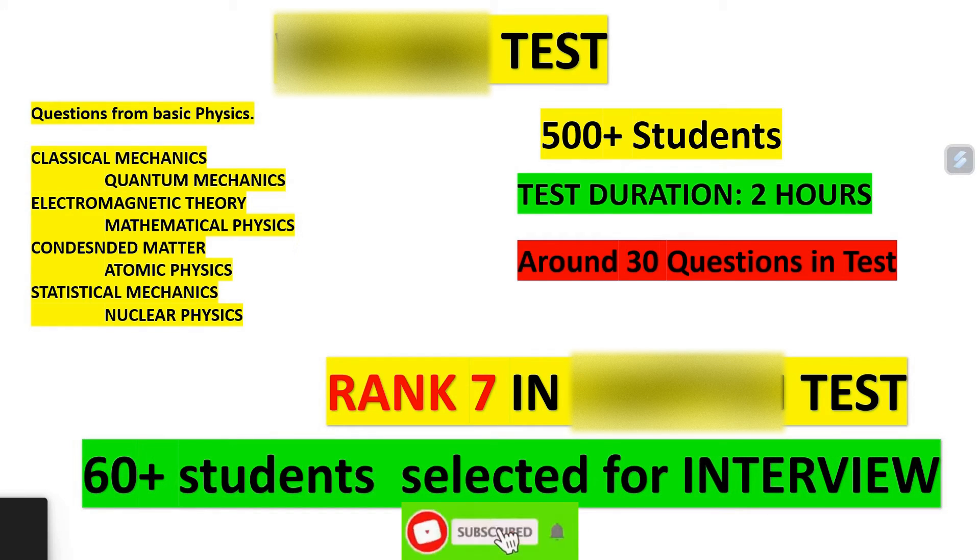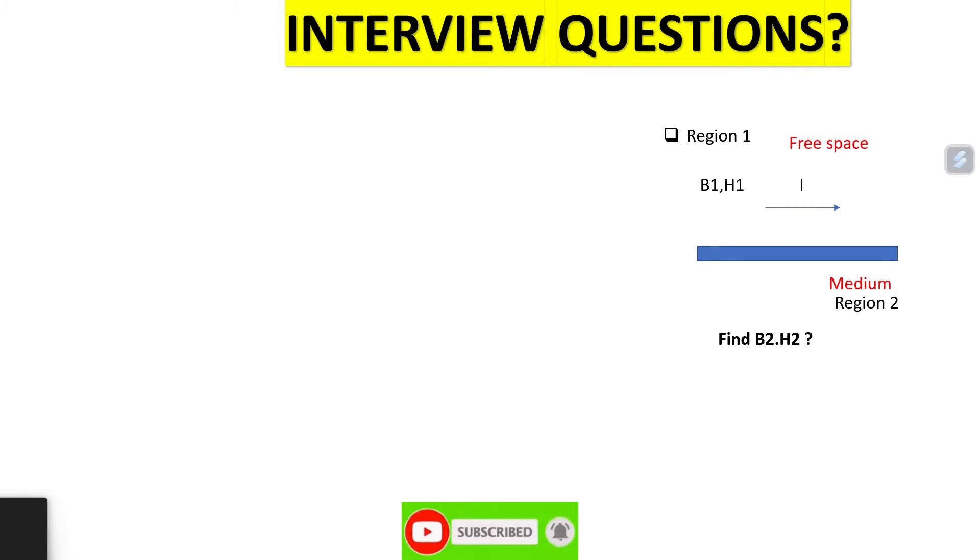We were called for the next round of interview on the same day. In my interview panel, there were around 10 professors and the interview lasted around 20 minutes. When I entered the interview room and sat in front of them, one professor asked me which area I want to work in, theoretical or experimental. I told theoretical. After that, they started bombarding questions on me from different areas of physics.